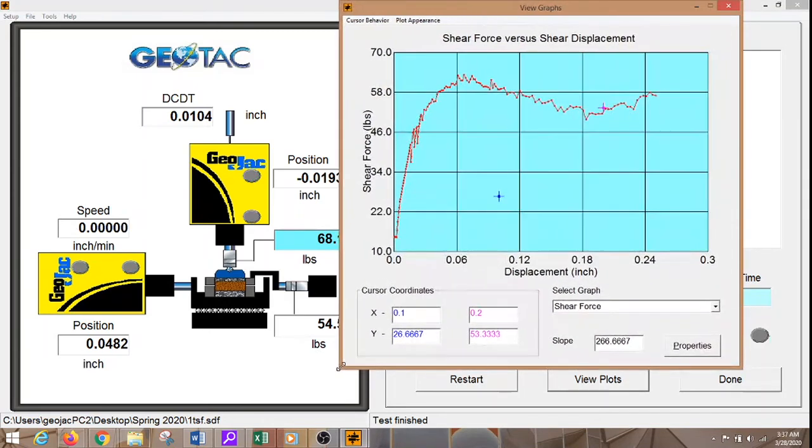Make this bigger. This is a plot of the shear force on the vertical axis and the horizontal displacement on the horizontal axis. From this plot you can see that the soil got to a maximum load of about 60 pounds and afterwards it dropped significantly indicating that the soil has failed. So I will just close this particular one and move on to the next normal stress. That will be 2 TSF.